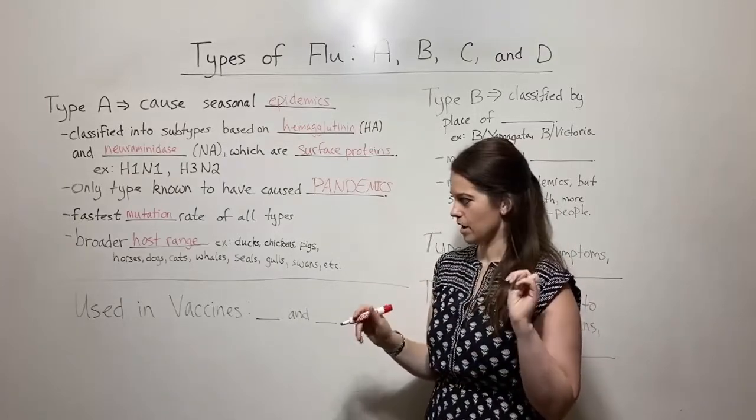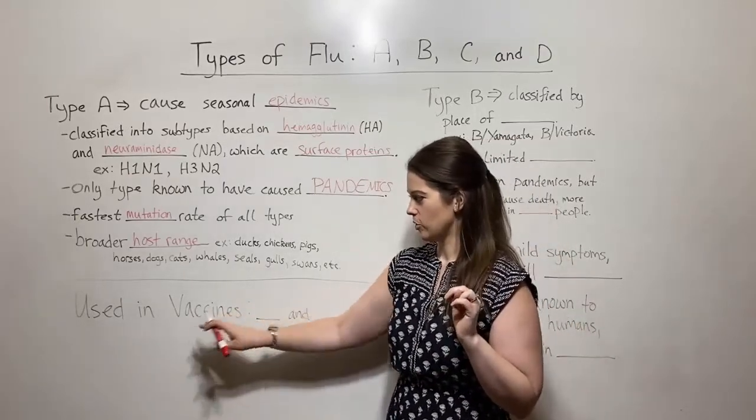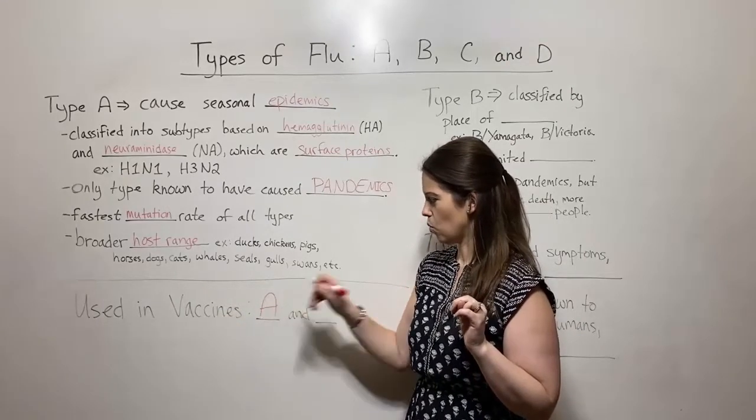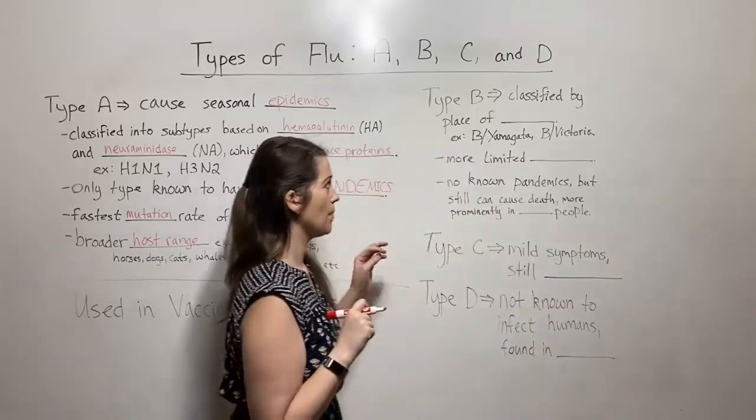Now there are two different types that we're talking about today that are used in vaccines. Type A is one of them. Now let's talk about type B.